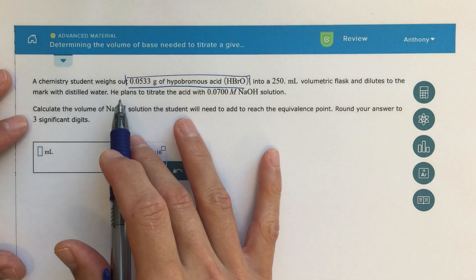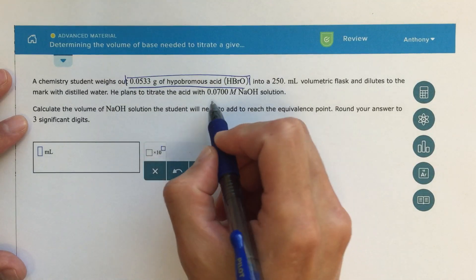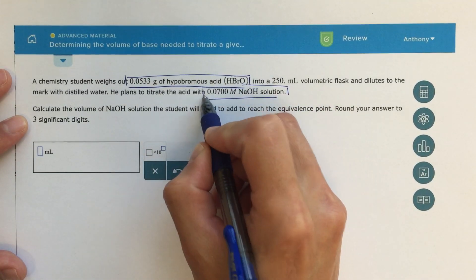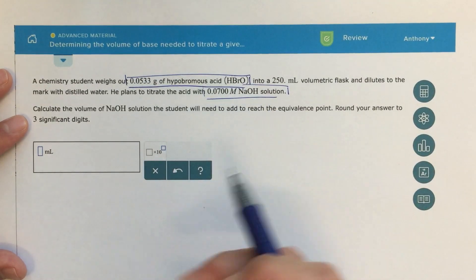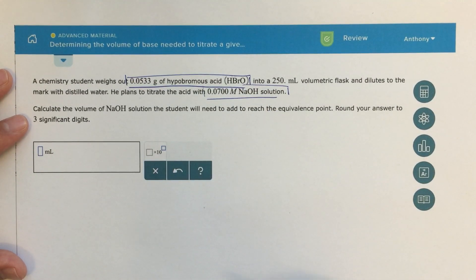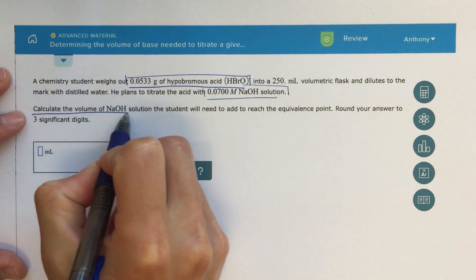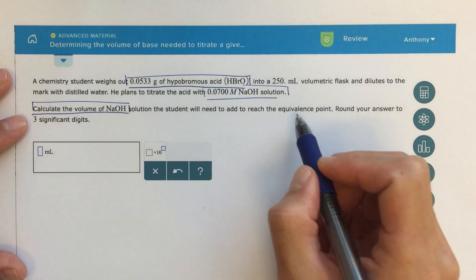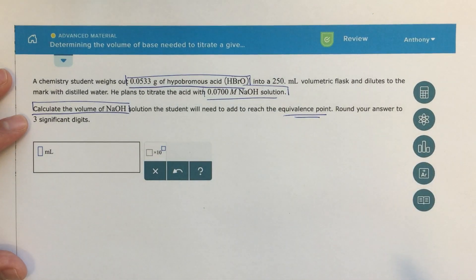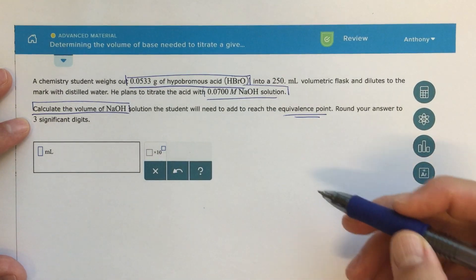He or she plans to titrate the acid with 0.0700 molar sodium hydroxide. So this is the base that I'm going to use to do the titration, and then it says calculate the volume of sodium hydroxide solution the student will need to add to reach the equivalence point. So we're going to be looking for the equivalence point, round your answer to 3 sig figs.